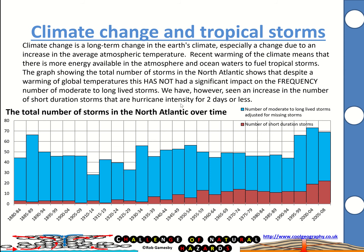The graph shows the number of storms in the North Atlantic — that's one of our longest records. It shows the total number of storms: the moderate to long-lived storms in blue, and the short-duration storms in red at the bottom. The number of moderate to long-lived storms hasn't really gone up very much — it declined a little through the period from 1965 through to about 1994, and then after that we've got more of them. What is clear is that the number of short-duration storms has gone up, meaning in total we are seeing more storms overall, though not a massive impact on the total number.